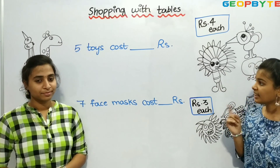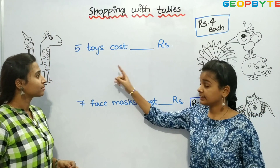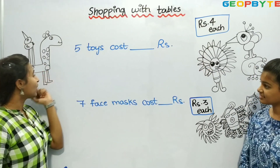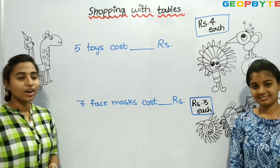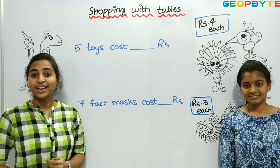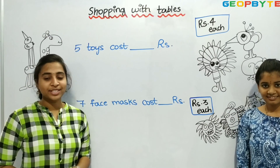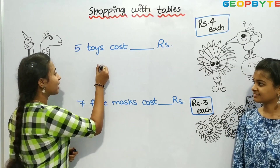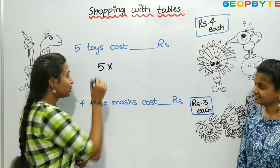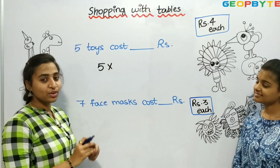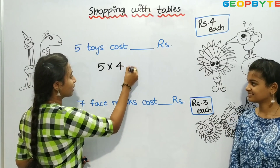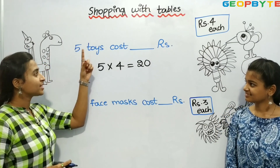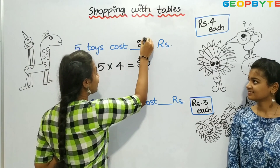Now, let us see the next one. 5 toys cost dash rupees. Here are some toys, rupees 4 each. That means each toy costs rupees 4. We need to find out the cost for 5 toys. So, 5 toys into the cost of each toy is rupees 4 — that is 5 into 4. 5 fours are 20. So, 5 toys cost rupees 20.